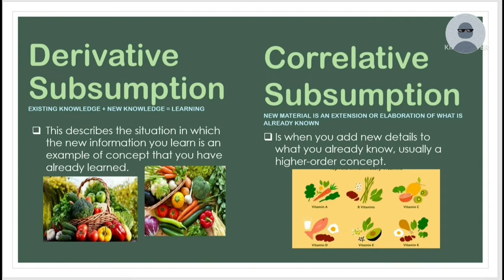Correlative subsumption is when you add new details to what you already know, usually forming a higher-order concept. Using the same vegetable example, suppose you encounter the nutritious contents of vegetables — like the vitamins shown in the picture. In order to accommodate this new information, we need to extend or expand our concept of vegetables beyond our previous understanding. In correlative subsumption, you are creating a higher-order concept using your basic knowledge.